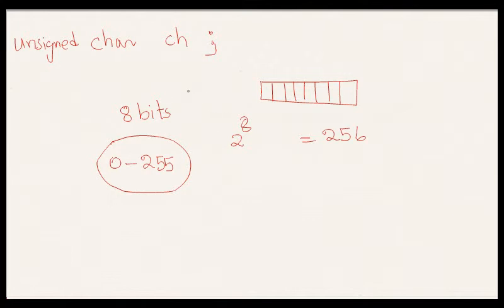That is the reason why unsigned char can only hold positive numbers. Because we have 8 bits.